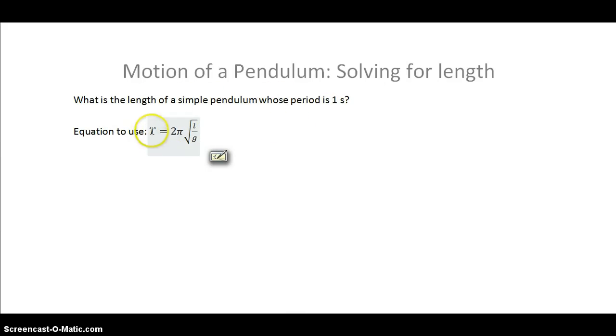If we're given the period t, the only other variable is our length. We know gravity and of course we know what 2 times pi is. So let's go ahead and begin to solve for this equation.